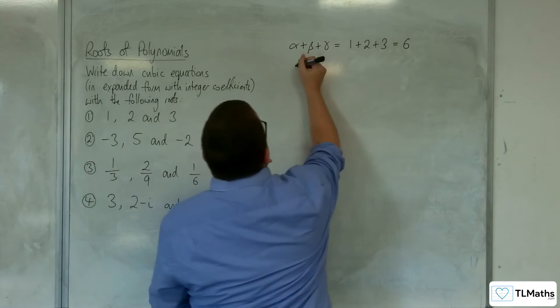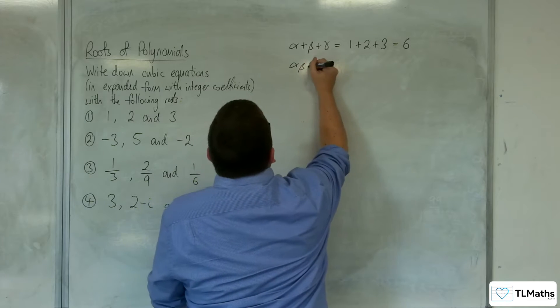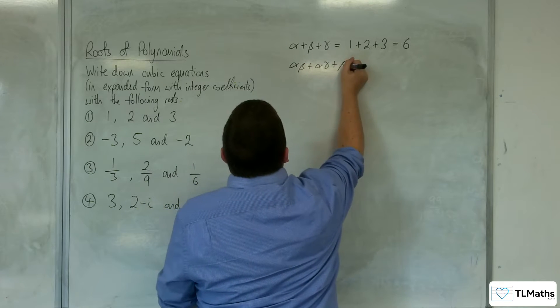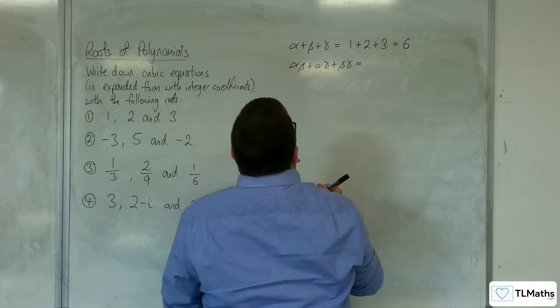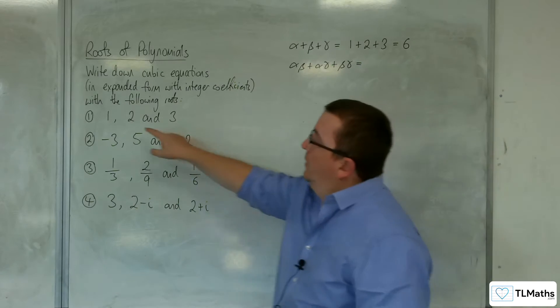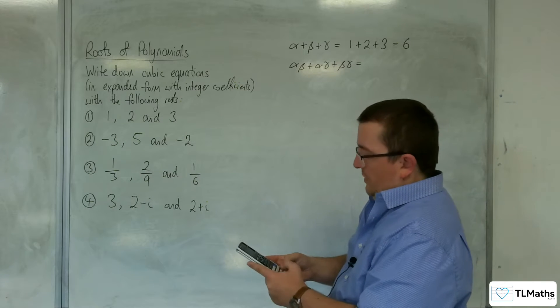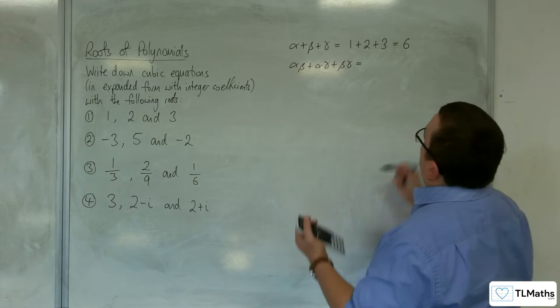Then we've got the sum of the product pairs. So alpha beta plus alpha gamma plus beta gamma. So we're going to have 1 times 2 plus 1 times 3 plus 2 times 3, and that gets me to 11.